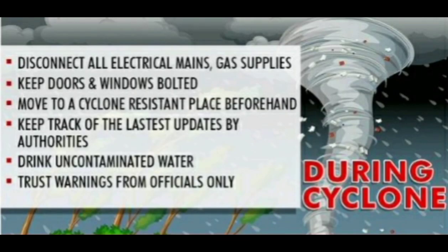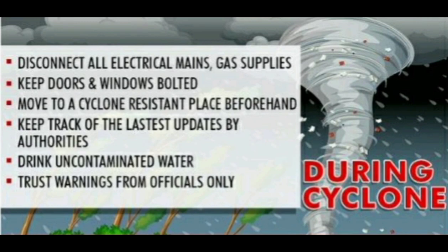Precautions to be taken during the cyclone: Switch off electrical equipment and the main line. Also close the gas connection. Keep the doors and windows of your house shut as outside objects may hit the house in heavy winds. If you think your house may not withstand the fierce winds, leave before the onset of the cyclone. Always drink chlorinated or boiled water to avoid waterborne diseases. Only rely on official information and warnings. Avoid rumors and fake news.